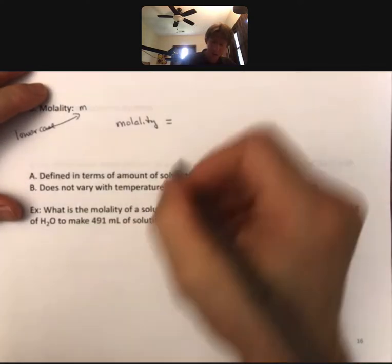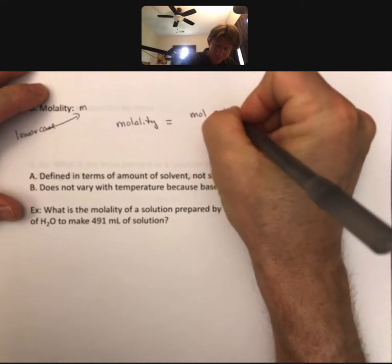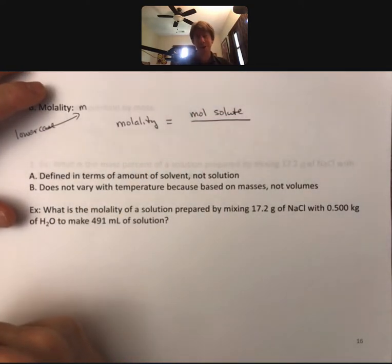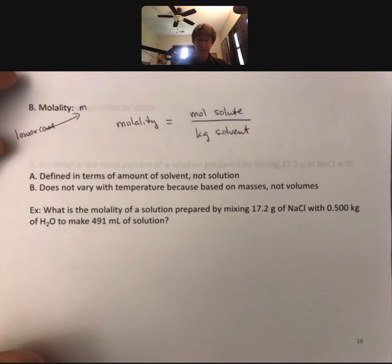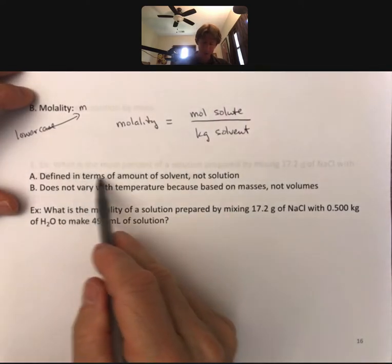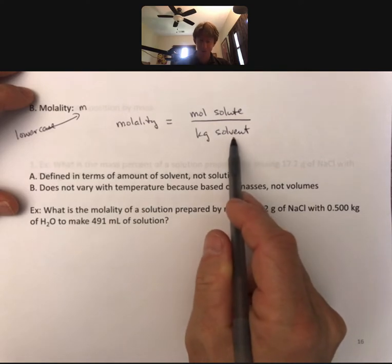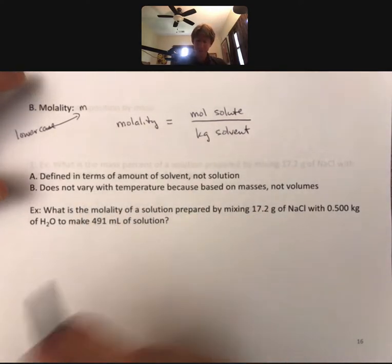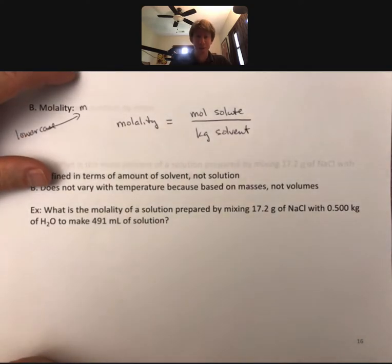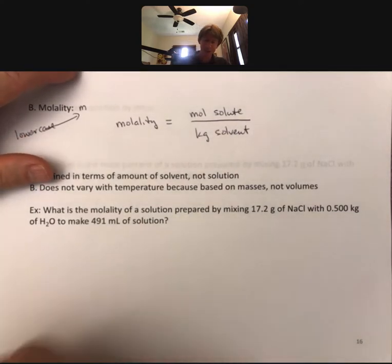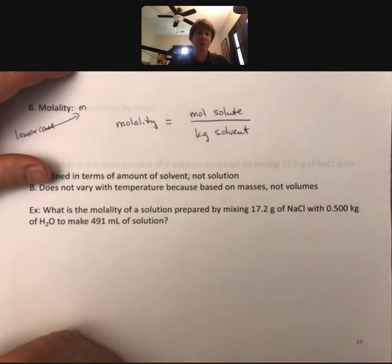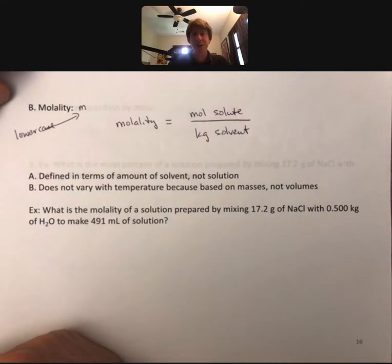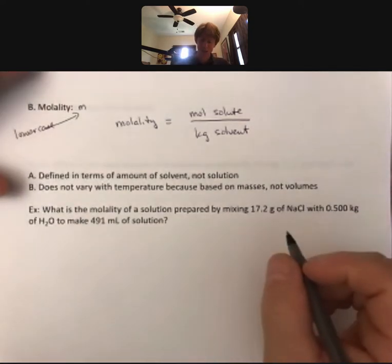Molality is moles of solute over kilograms of solvent — defined in terms of the amount of solvent, not solution. It does not vary with temperature because it's based on masses and not volumes. The moles will be based on masses, and kilograms is a measure of mass. This is a more biological type of unit; we don't use it as much in chemistry unless we're leaning towards the biology side.